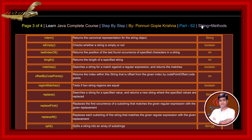matches method searches a string for a match against a regular expression and returns the matches. offsetByCodePoints method returns the index within the string that is offset from the given index by codePointOffset code points. regionMatches method tests if two strings' regions are equal.